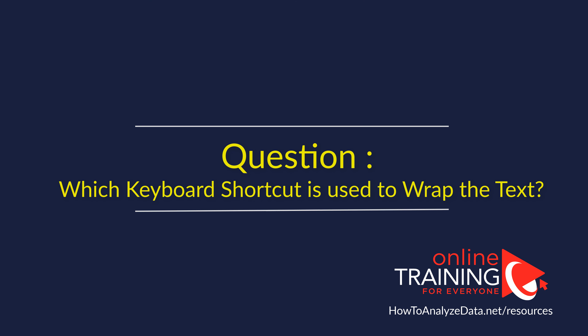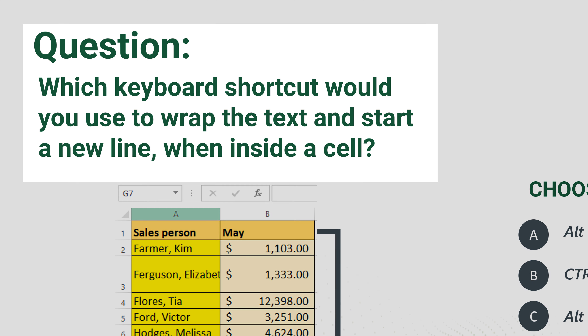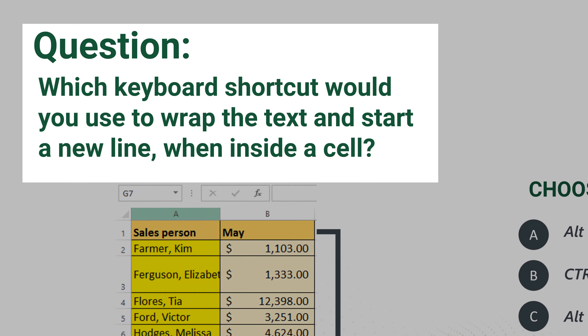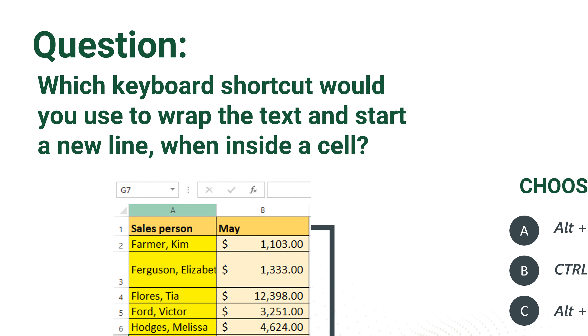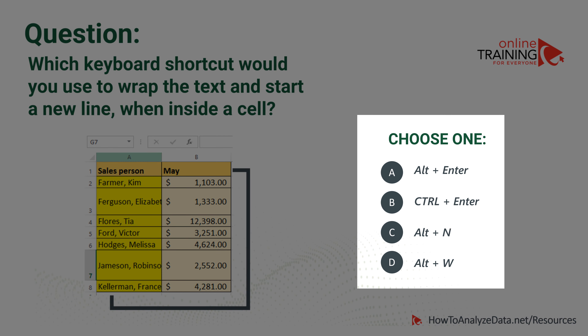Keyboard shortcut questions are very frequently presented as part of Excel assessment tests. Let's look at one of those questions: which keyboard shortcut would you use to wrap the text and start a new line when inside the cell? There are four choices: Alt plus Enter, Control plus Enter, Alt plus N, and Alt plus W. Which one would you choose?